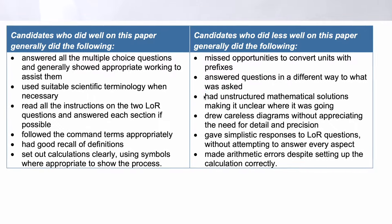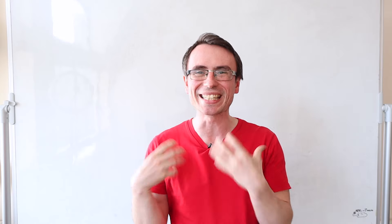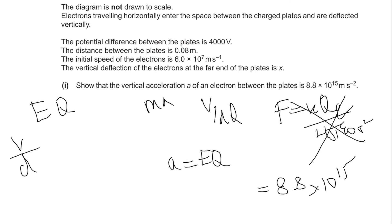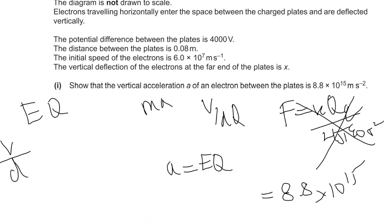Every year the examiners report in A-level physics identifies a common mistake, and that is show questions. Some even say that examiners were finding it difficult to award marks because the candidate's work was disorganized.